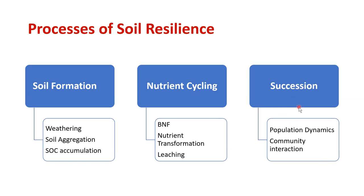Then succession — which is also a kind of property or process of resilience. Whatever the population dynamics in that soil, the microbial population dynamics and community interaction of different microbial populations — that is basically succession from one generation to the others. If we use this soil for a certain period of time, what will we get in the end in terms of microbial population and community interaction?